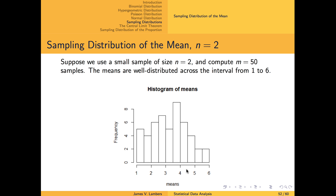Here is that histogram for the case of a very small sample size, n equals 2. We can see that the sample means are not uniformly distributed like in the original experiment of a single die roll, but most values are fairly well represented in this histogram.